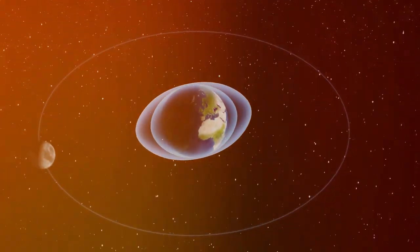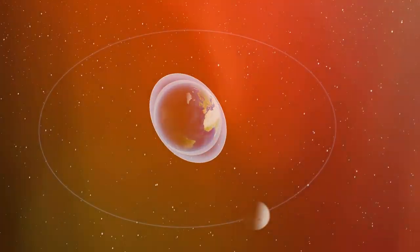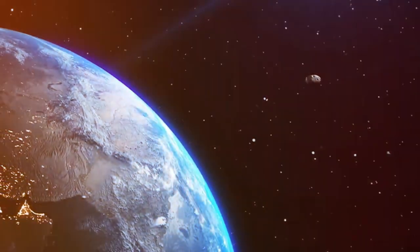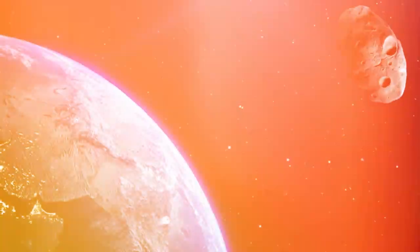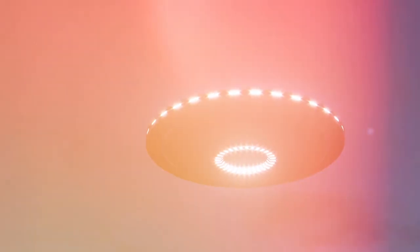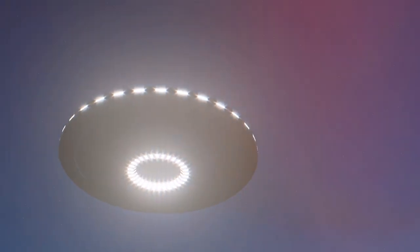Earth has previously captured other temporary mini moons, such as asteroid 2020 cd3. Although that asteroid was first spotted whirling around Earth in February 2020 and departed a couple of months later, research showed it had orbited our planet for a few years before being detected. Asteroid 2020 cd3 is considered a long capture mini moon, while the newly detected asteroid 2024 pt-5 is a short capture one.